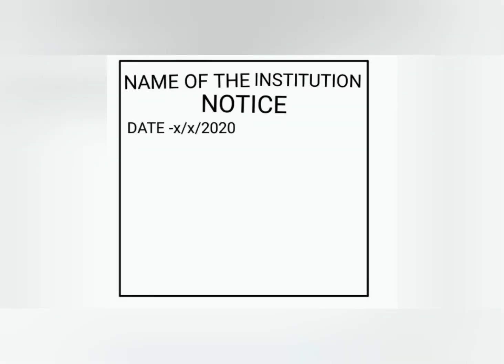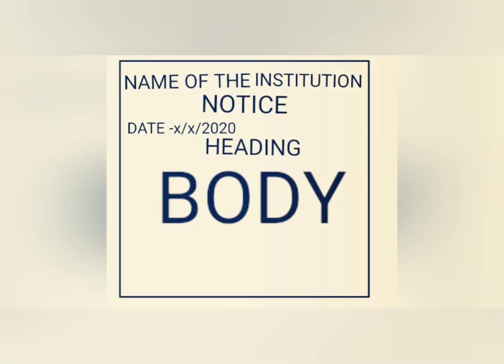After the title, on the left-hand side, write the date on which the notice is written. Since this is a formal document, date is an important aspect. Then move on to an appropriate heading for the notice. You are supposed to affix a catchy heading in the middle of the next line. After giving a suitable heading, write a brief and to-the-point body of the notice. The body should contain all the necessary information required in the notice.